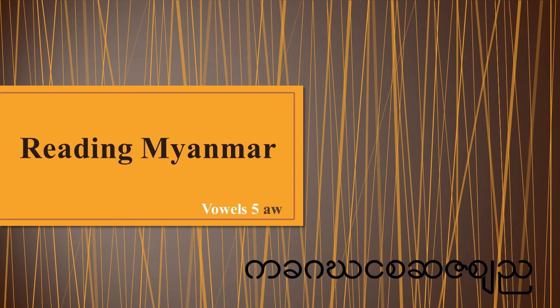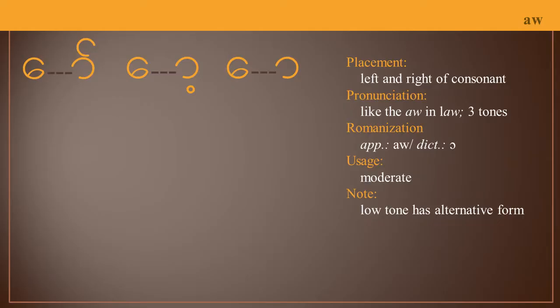Reading Myanmar Vowels Lesson 5. In this lesson you recognize these two symbols. They are two vowels on their own and they appear in the same location.